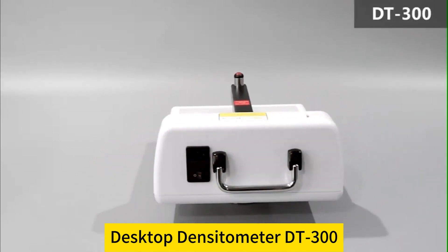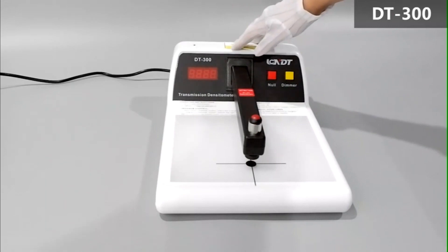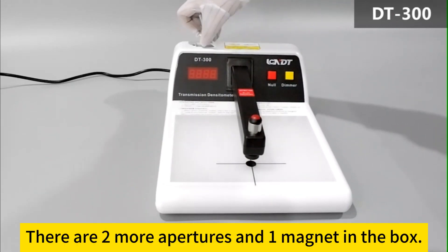Desktop densitometer DT300. There are two more apertures and one magnet in the box.